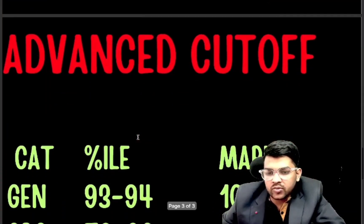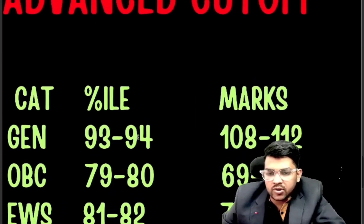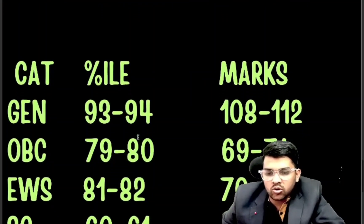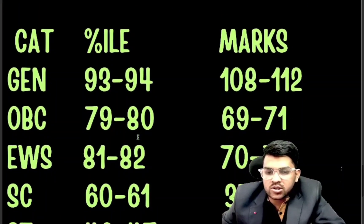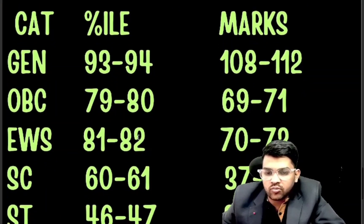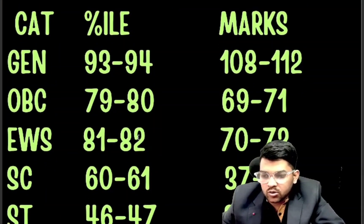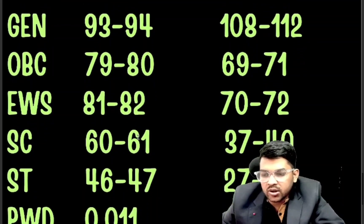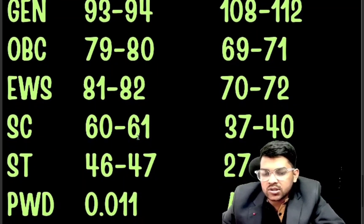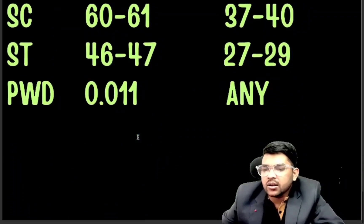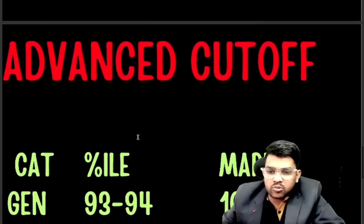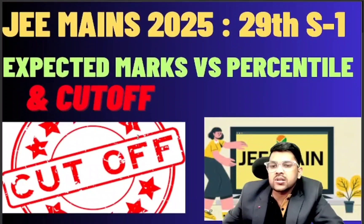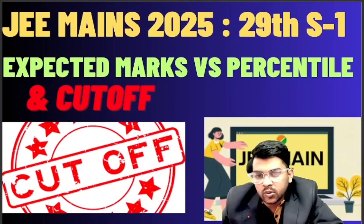Here is the JEE Advanced cutoff: for General category, 118 to 120 marks is required; OBC 69 to 71; EWS 70 to 72; SC 37 to 40; ST 27 to 29; and for PWD, you just need to reach the center. This was the complete information regarding 29 Shift 1 expected marks versus percentile.